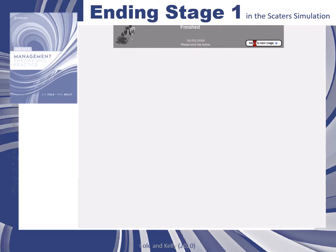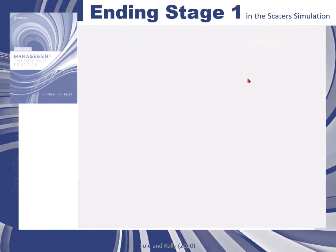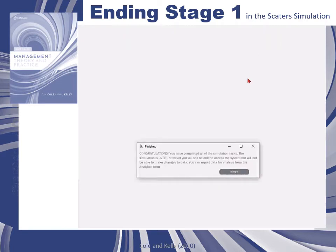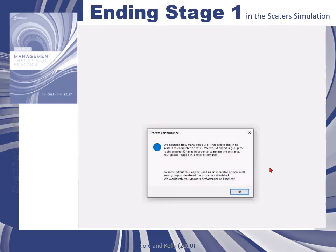Click 'Move to the next stage' when the data processing is finished and read the information that's presented to you. Process performance advises how many clicks it took you to finish the simulation, and this influenced the amount of revenue you generated in stage one.